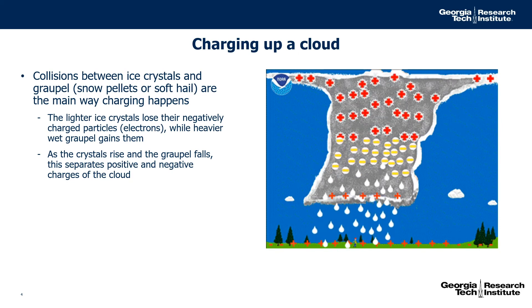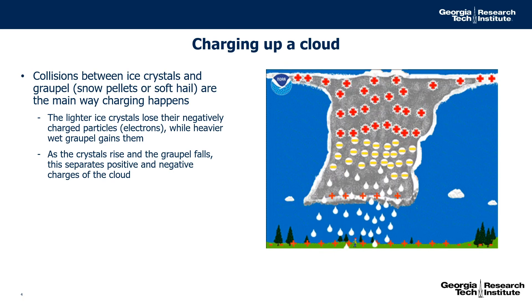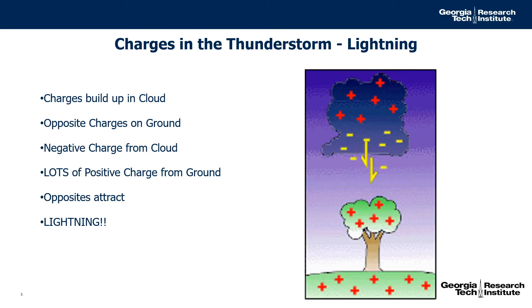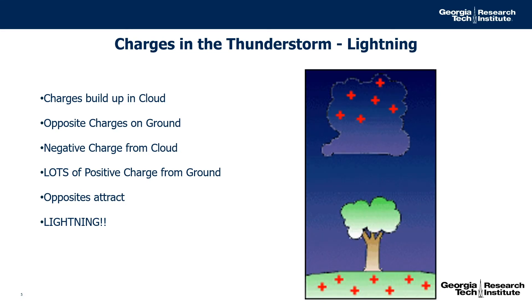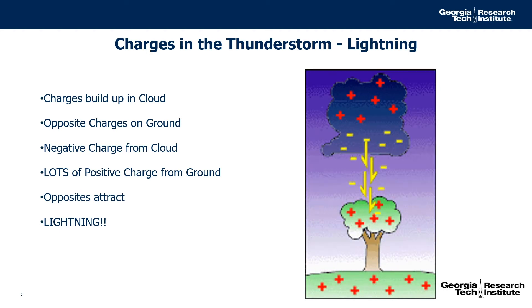Therefore, the positive crystals rise and the negative graupel falls, and that separates positive and negative charge in the cloud. As these charges build up in the cloud, they attract opposite charges on the ground. When there's enough negative charge in the cloud and enough positive charge on the ground, those opposites attract and we get lightning going from the cloud to the ground and the ground to the cloud.